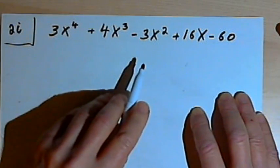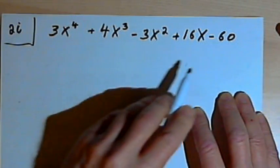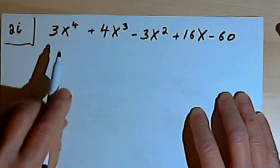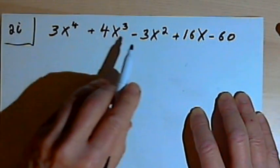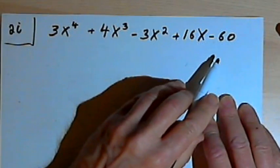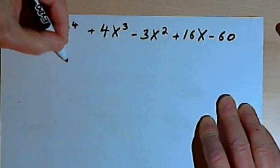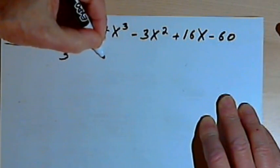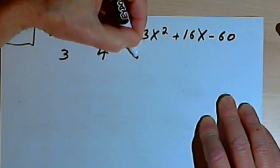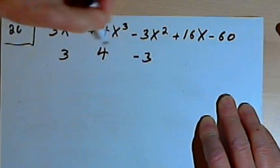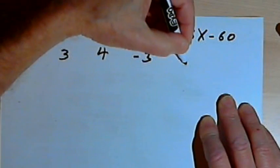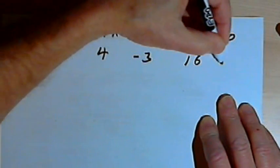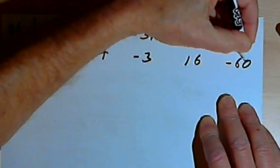As with normal synthetic division, we're going to copy down all of the coefficients of this polynomial. When we do this, we want to leave plenty of room in between the coefficients. As we do this, you'll see why all that room is necessary. So I have 3, 4, negative 3, 16, and negative 60.